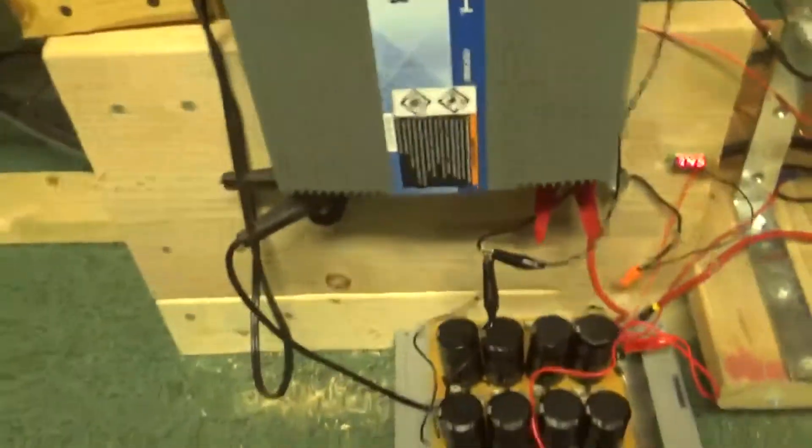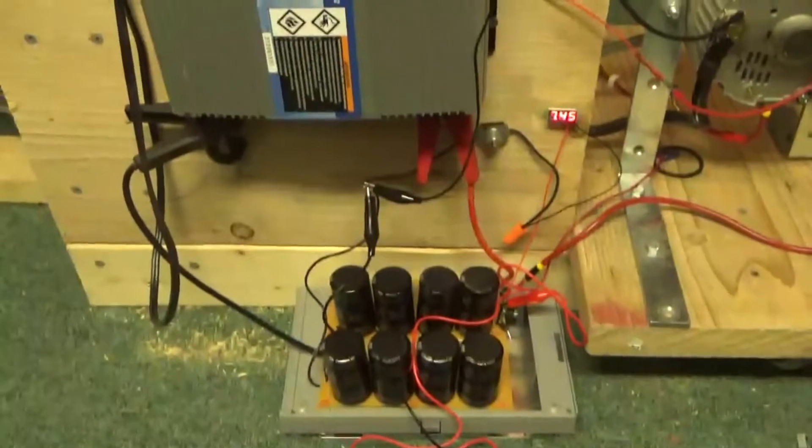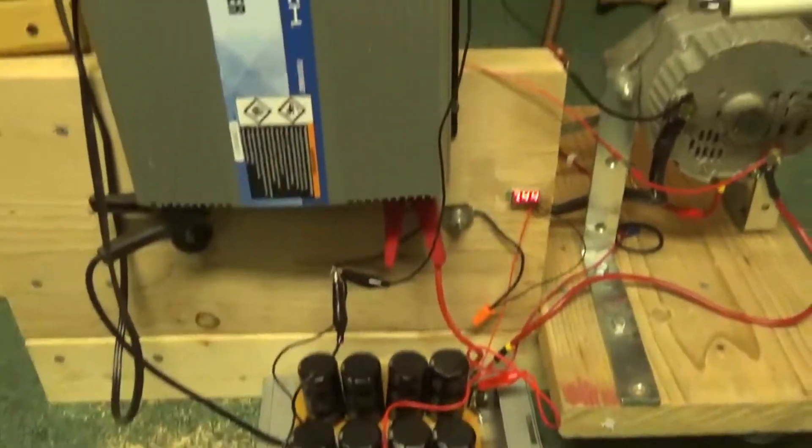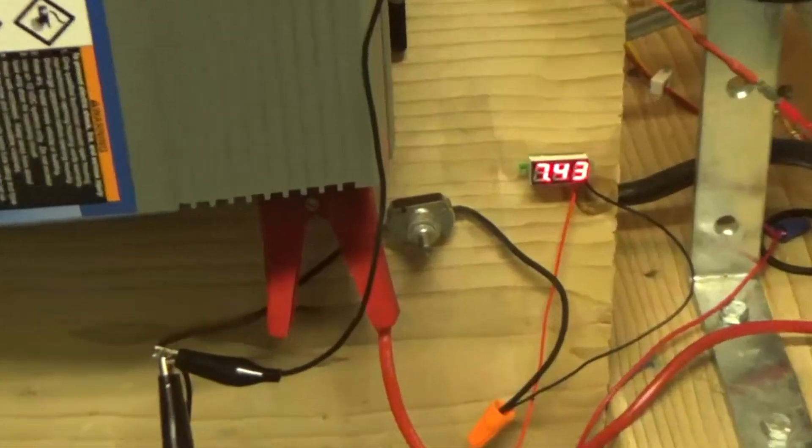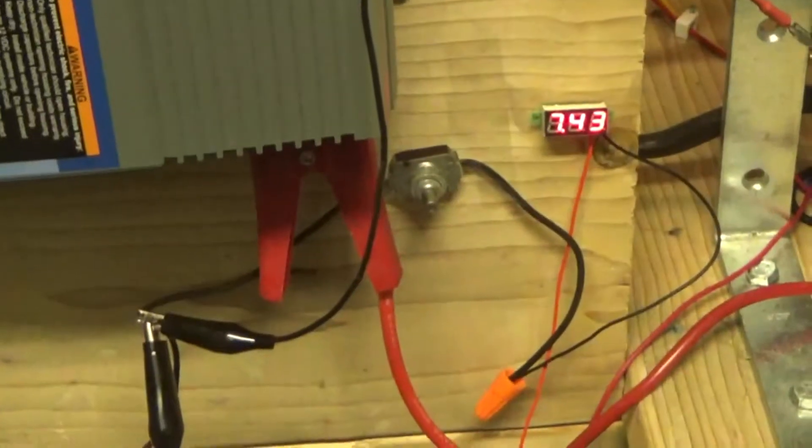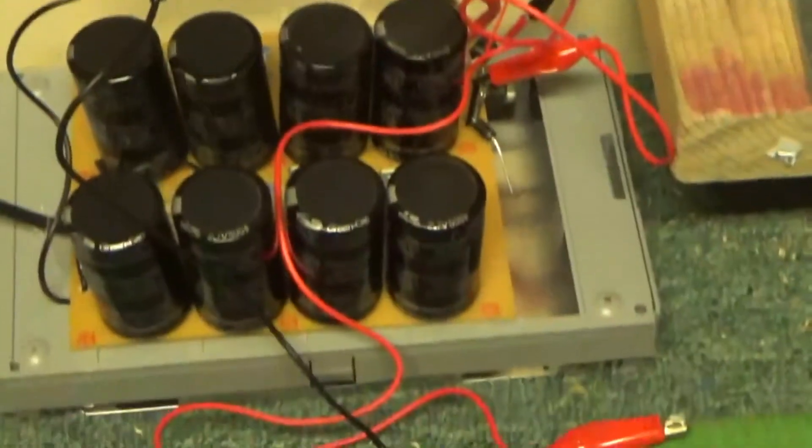So here I have my homebrew setup here and right now showing that the super capacitor has about seven volts on here.